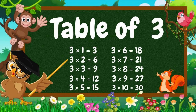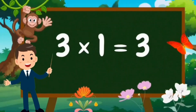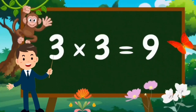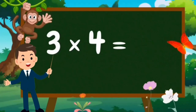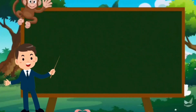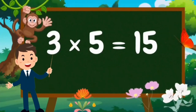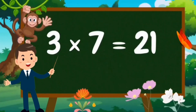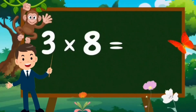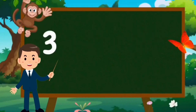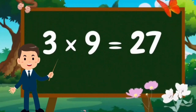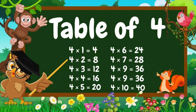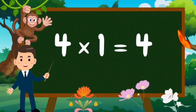Table of Three. Three ones are three. Three twos are six. Three threes are nine. Three fours are twelve. Three fives are fifteen. Three sixes are eighteen. Three sevens are twenty-one. Three eights are twenty-four. Three nines are twenty-seven. Three tens are thirty.